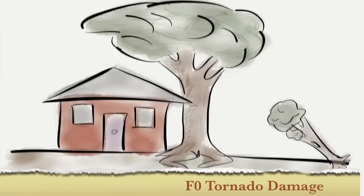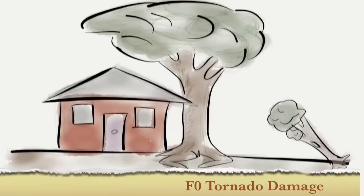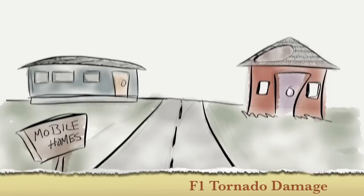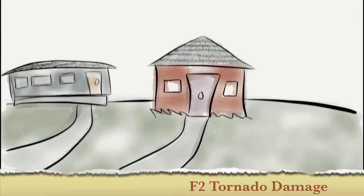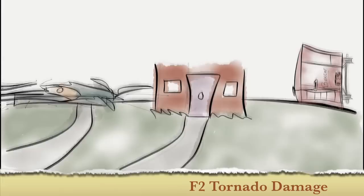First, the F-0: some damage to chimneys, it breaks off branches of trees, it pushes over shallow-rooted trees. An F-1 tornado kills the surface off of roofs, mobile homes are pushed off their foundations and overturned, and moving automobiles are pushed off the roads. An F-2 tornado is a significant tornado — roofs are torn off of framed houses, mobile homes are demolished, boxcars can be pushed over, and large trees are snapped or uprooted.